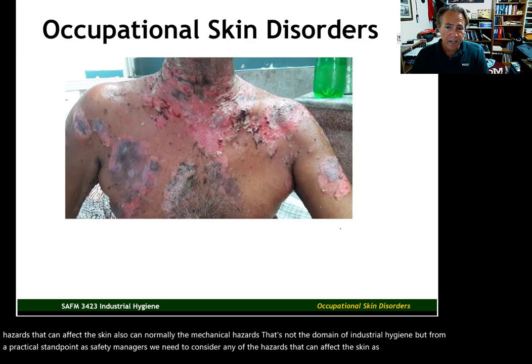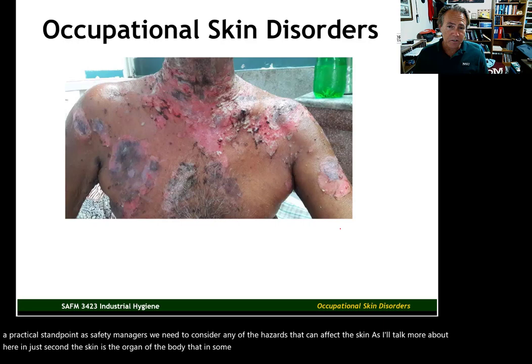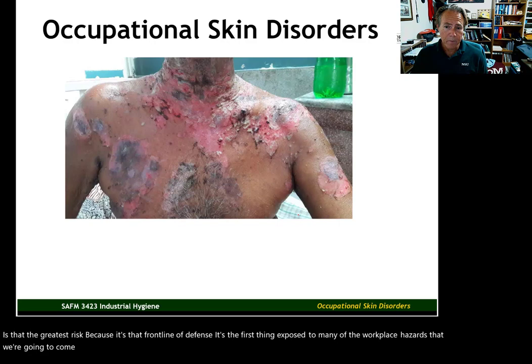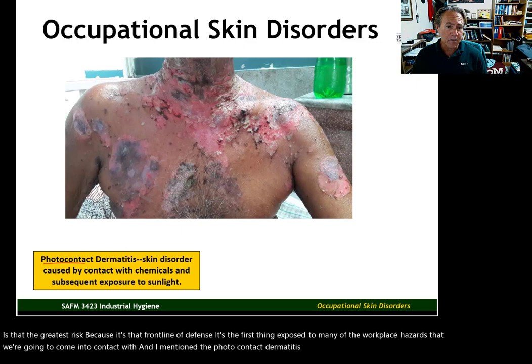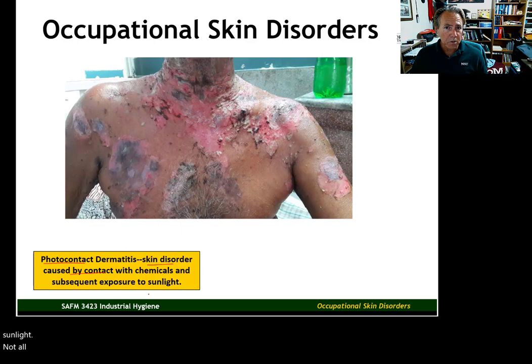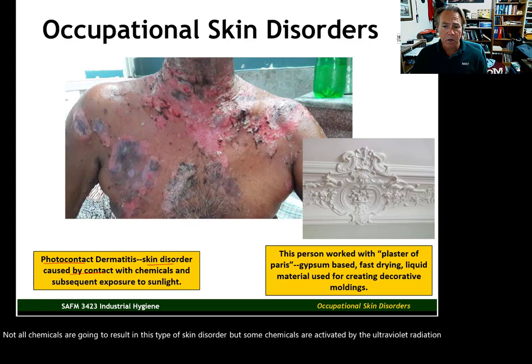The skin is the organ of the body that in some ways is at the greatest risk, because it's that front line of defense — it's the first thing exposed to many of the workplace hazards we're going to come into contact with. I mentioned photocontact dermatitis, or the interaction between the sunlight and the gypsum. The term for that is photocontact dermatitis: a skin disorder caused by contact with chemicals and subsequent exposure to sunlight. Not all chemicals are going to result in this type of skin disorder, but some chemicals are activated by the ultraviolet radiation in sunlight.